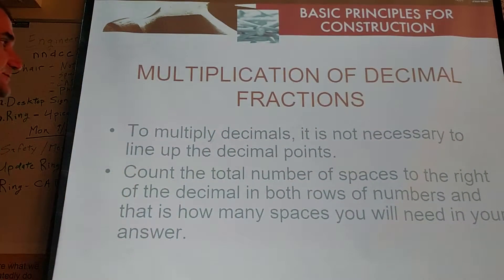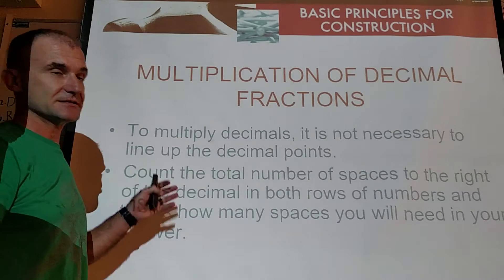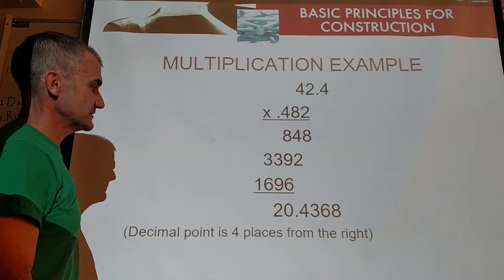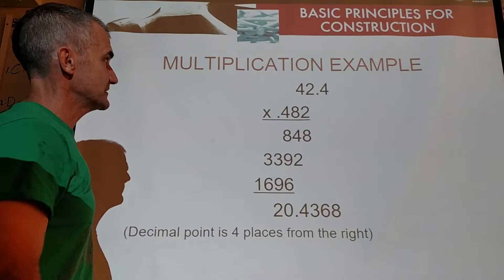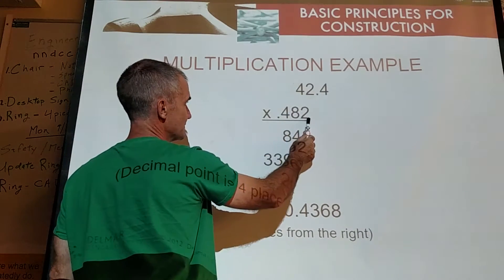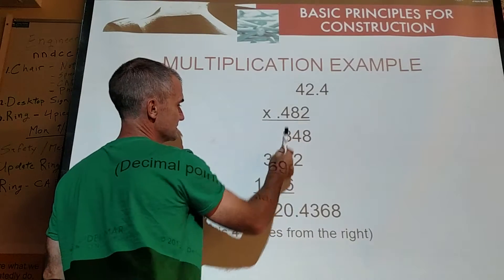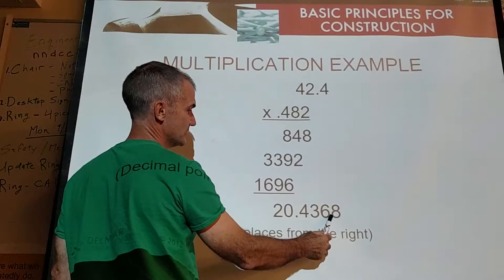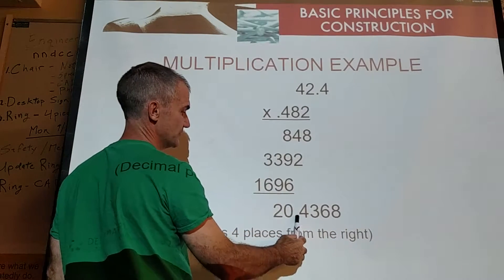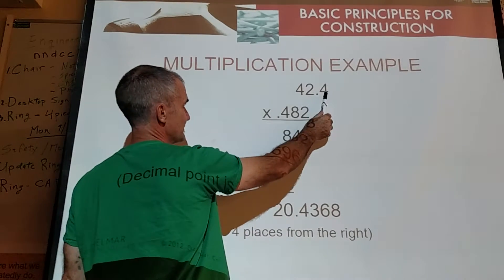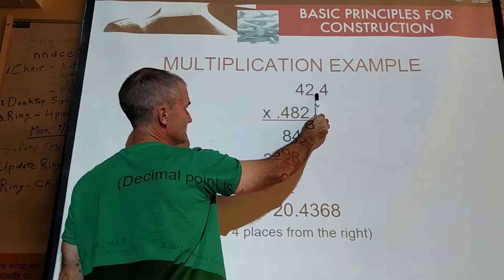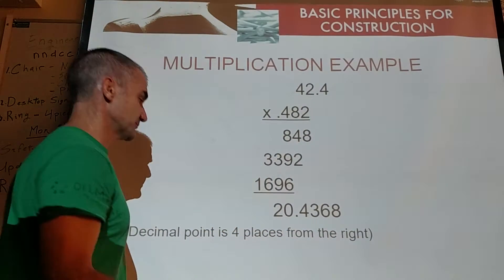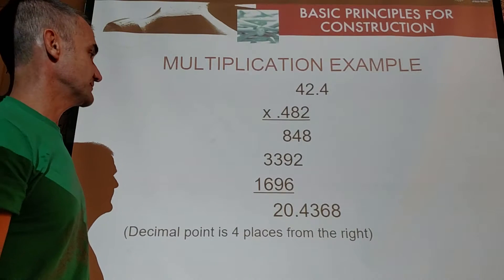So multiplying decimals is a little different. You don't line up the decimal place. Instead, you keep track of the decimal place. So here's an example of keeping track of the decimal place. Here I'm over 1. Here I'm over 1, 2, 3. So my final answer is down here. So I have to go over the 1 and the 3. So I go over 1, 2, 3, 4. So again, I figure out how many places I'm over. From the far right, I'm over 1, 2, 3, 4. And my final answer is 1, 2, 3, 4. And the multiplication is just the same as we did in Chapter 6.